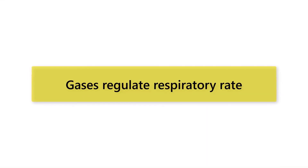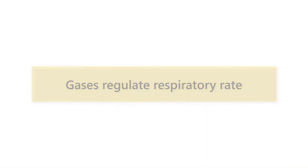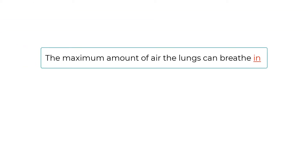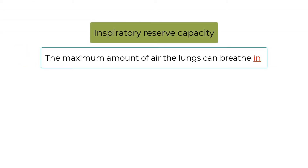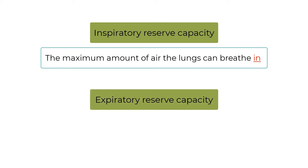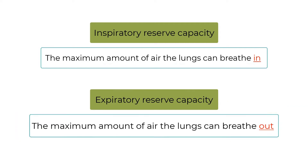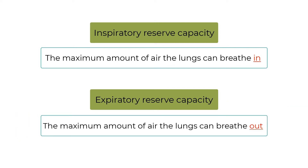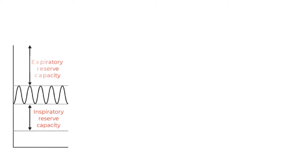Gases regulate respiratory rate. The maximum amount of air the lungs can breathe in is known as the inspiratory reserve capacity. Similarly, the expiratory reserve capacity is the maximum amount of air the lungs can breathe out. There is also a small amount of air known as the residual volume, which cannot be breathed out and helps keep the lungs from collapsing.